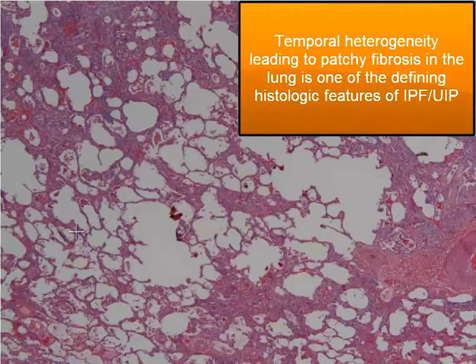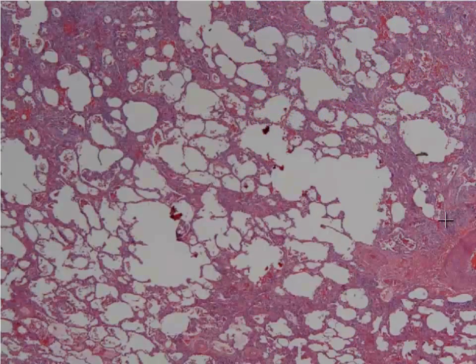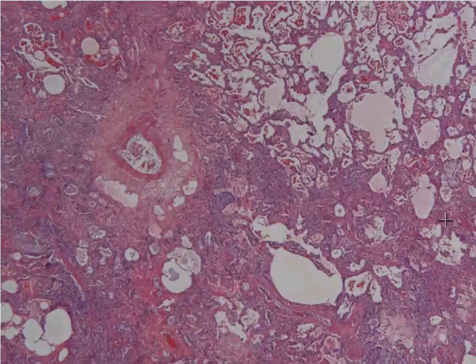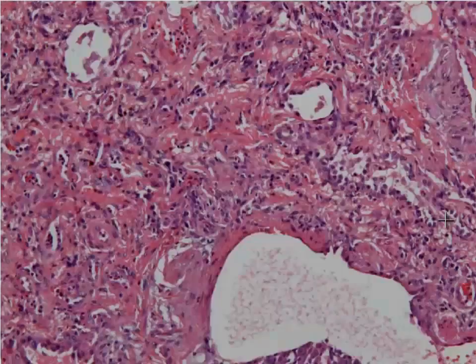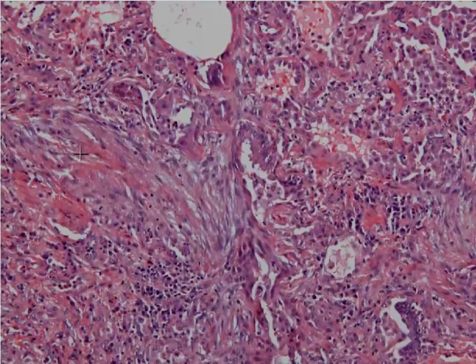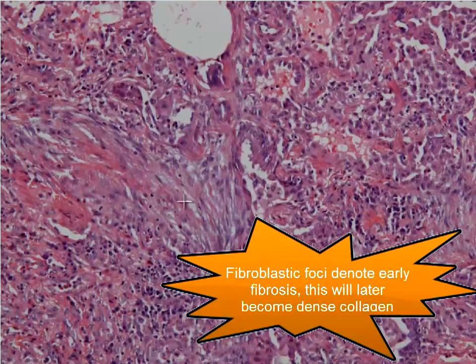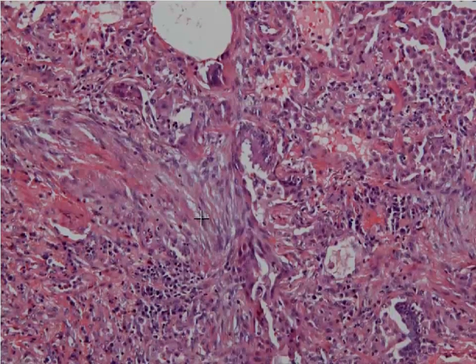If you go and look around within these fibrotic areas, especially at the edges, what you'll notice is that they often have these collections of fibroblasts, and we call those fibroblastic foci. These are the fibroblasts that are coming in and laying down all of this collagen, causing all of the fibrosis. This is a form of that exaggerated tissue repair response we talked about in chronic inflammation that is out of control in these patients, leading to remodeling of the lung.